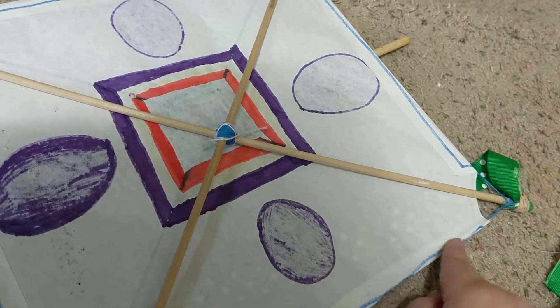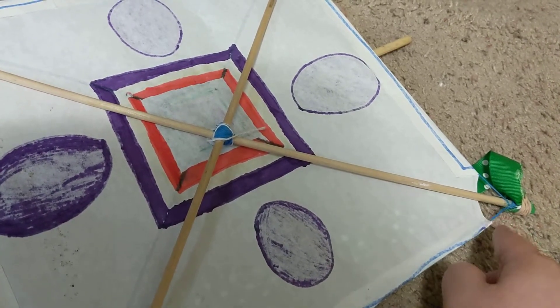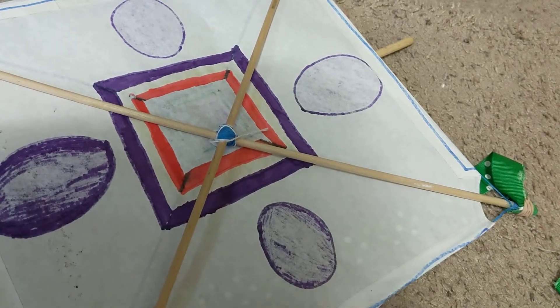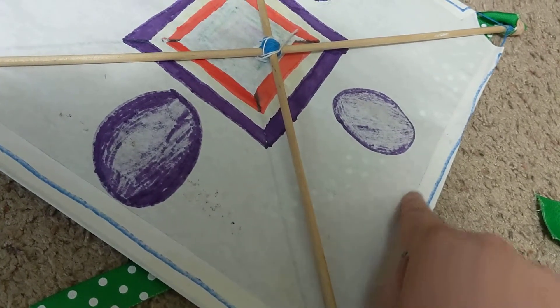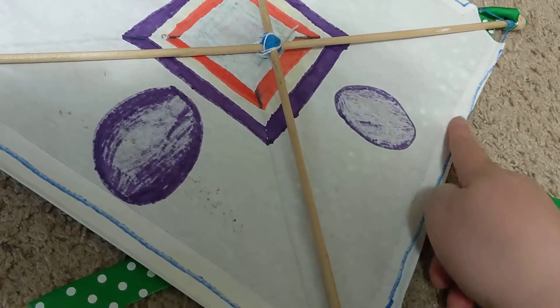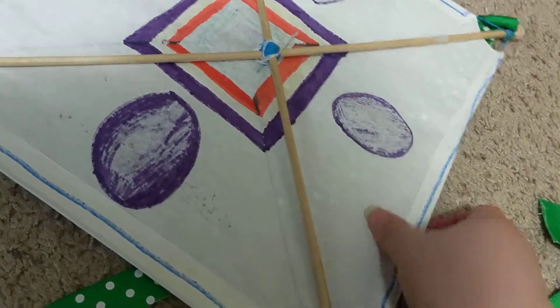And then I took some thread, and went around, made a square frame for the whole kite, and just took the edge of the paper that I had left over, and I just folded it right over the top, glued it down.